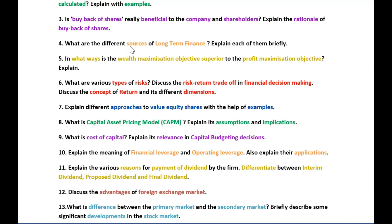The next question is on sources of long-term finance. Explain each of them briefly. The next question is in what ways is the wealth maximization objective superior to the profit maximization objective? Explain.